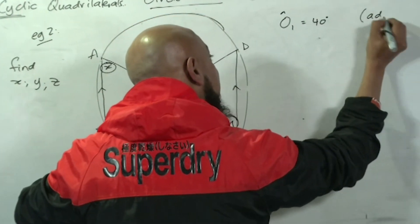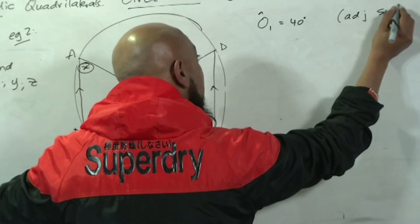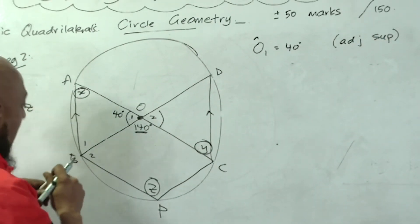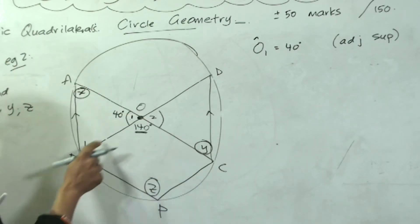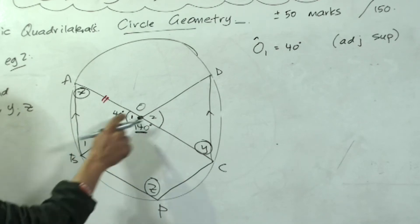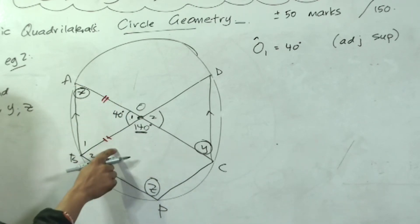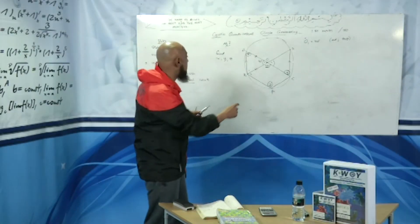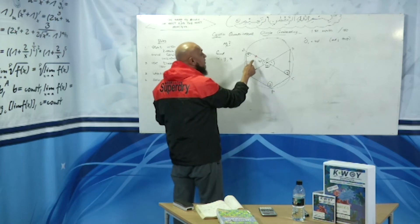Why did we say that? Adjacent supplementary angles on a straight line add up to 180 degrees. I also identify that I've got radii. I know that that side is equal to that side because radii are equal in length.